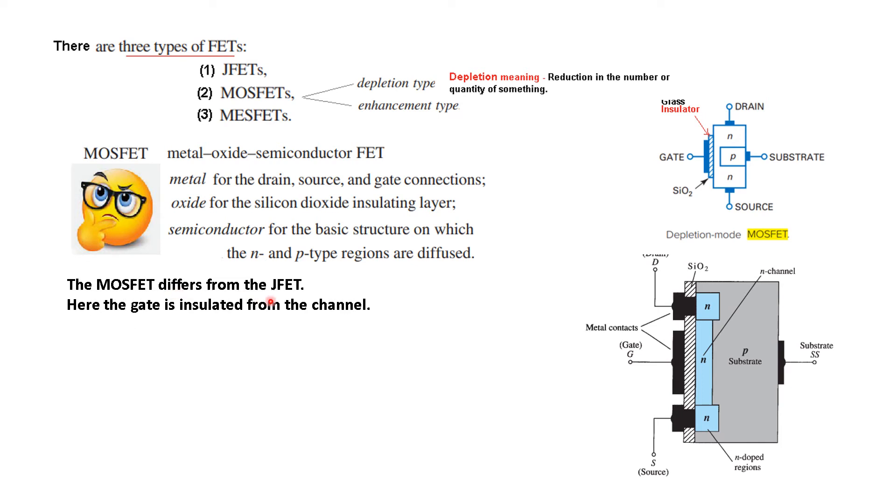And so metal oxide done, semiconductor is this material N-N-P type material. The construction of the MOSFET differs from JFET, here the gate is insulated from the channel so we just saw this. This is one of the difference.